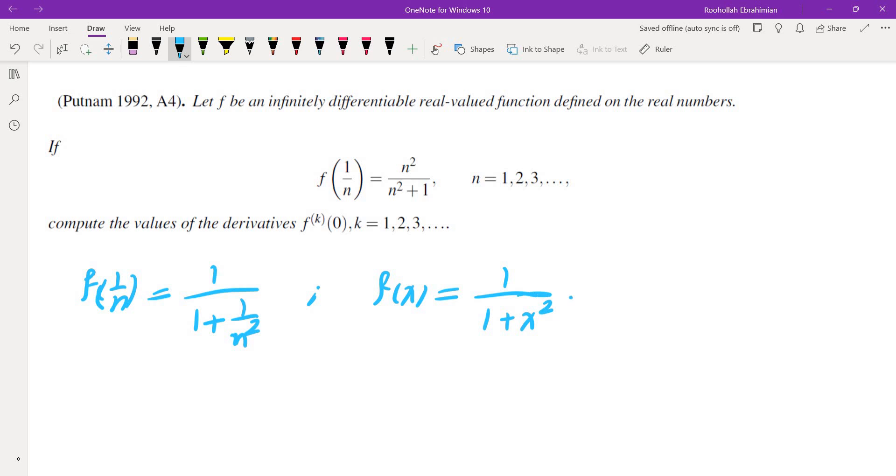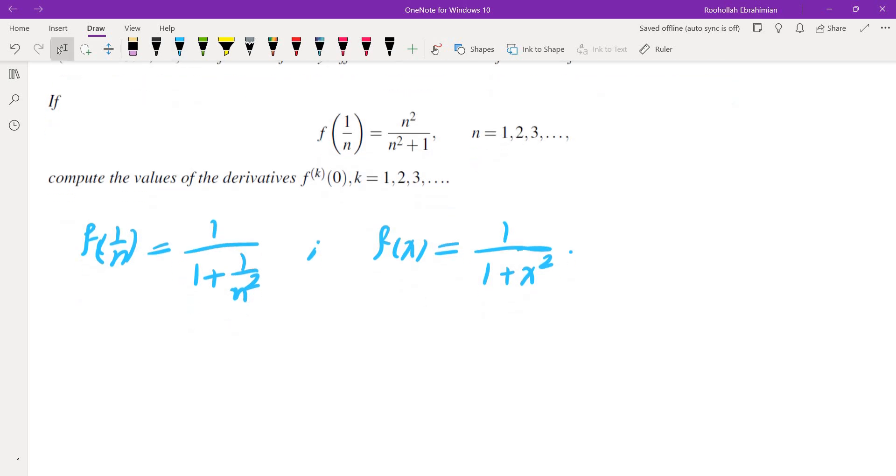So that makes sense. So now let me take this function and subtract from the original function and I get a new function, then that new function which I call it g of x, that new function satisfies g of 1 over n is equal to 0.